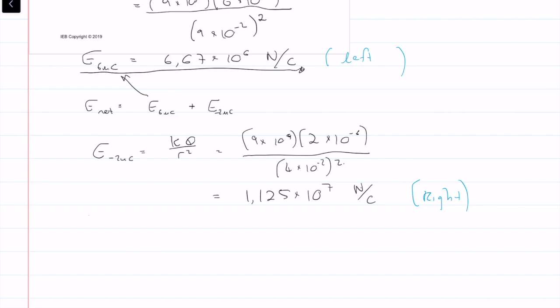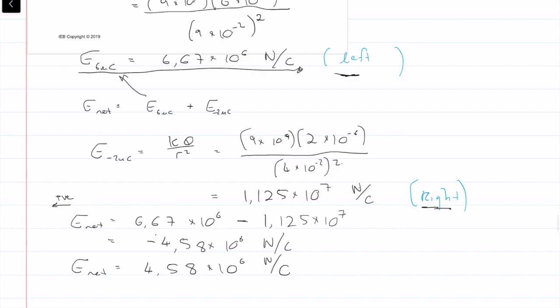When I'm calculating my Enet, it's going to be equal to, taking left as being my positive direction, 6.67 times 10 to the 6 left, so it's positive, minus, because it's moving to the right, minus 1.125 times 10 to the 7, which gives me a net field which is equal to minus 4.58 times 10 to the 6 newtons per coulomb. So Enet, the negative just as a direction, 4.58 times 10 to the 6 newtons per coulomb, and the negative would be towards the right.